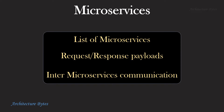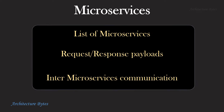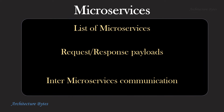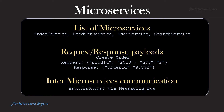Since we are using microservices, we will list all the microservices we will use, their request-response payloads, and how inter-microservice communication happens. Our microservices are Order Service, Product Service, User Service, Search Service, etc. An example of a request-response payload is shown here, which is a JSON message.